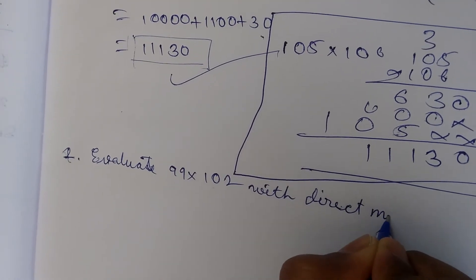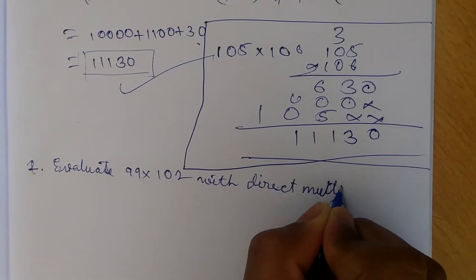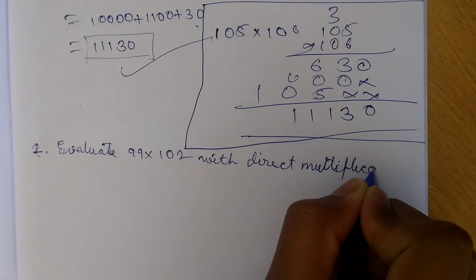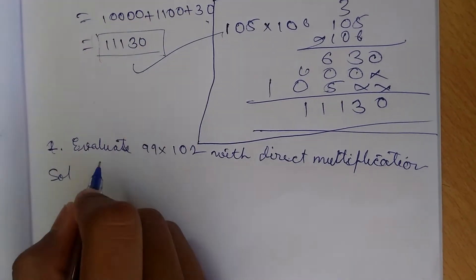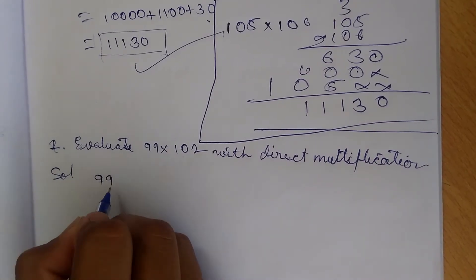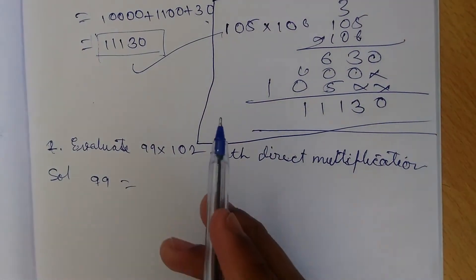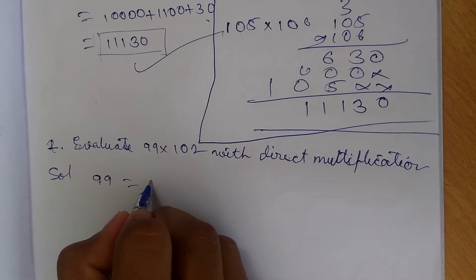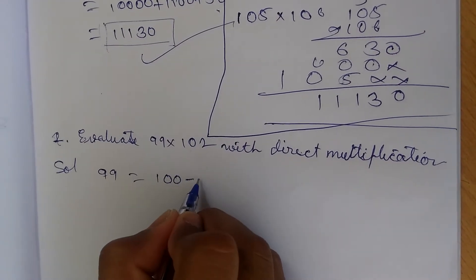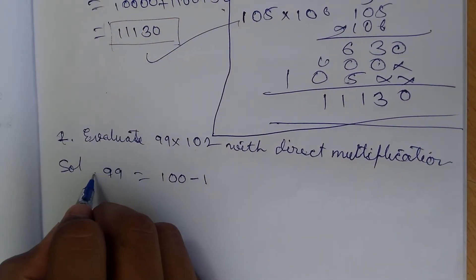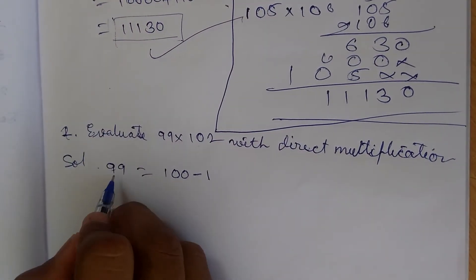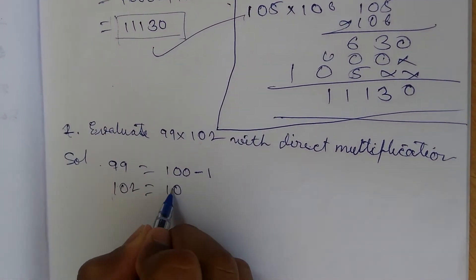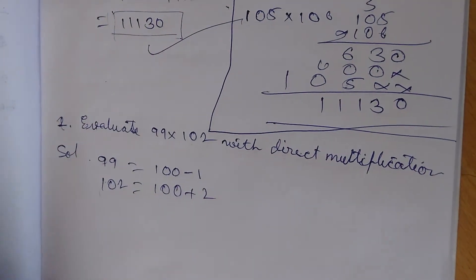The solution for this question is: 99, taking the same any number, I am taking again 100. So 99 is equal to 100 minus 1, and 102 is equal to 100 plus 2.